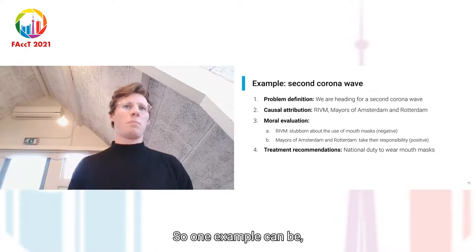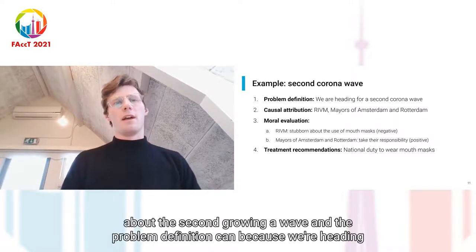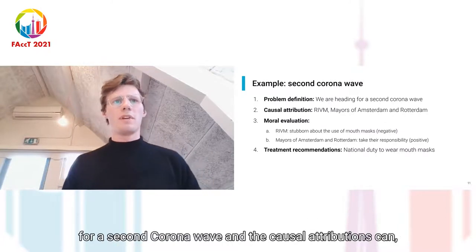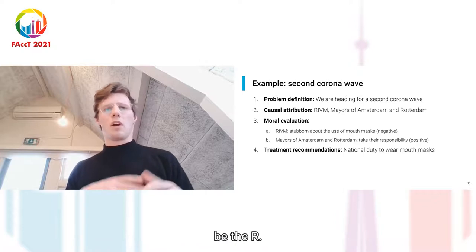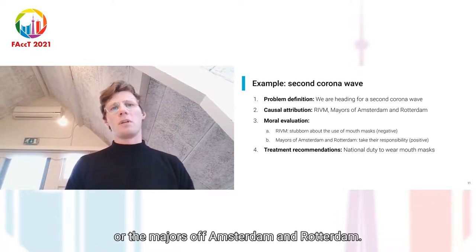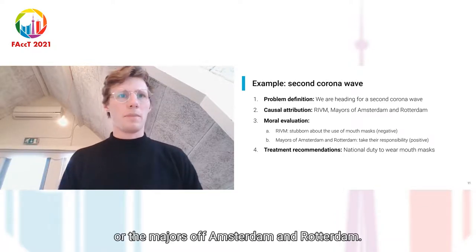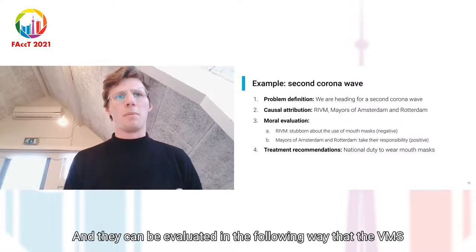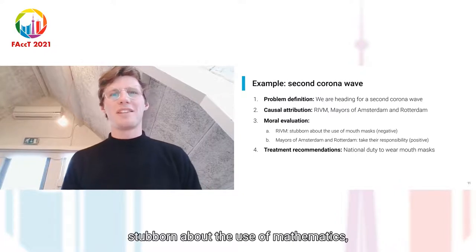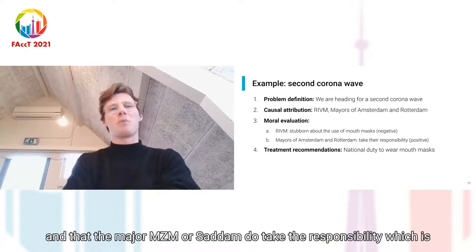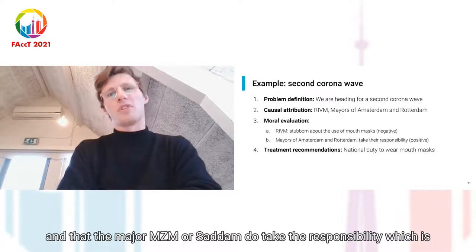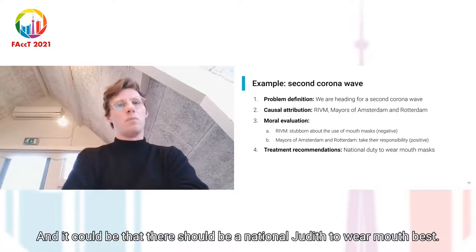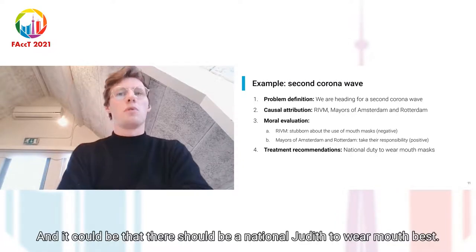One example can be about the second corona wave. The problem definition can be that we're heading for a second corona wave. The causal attributions can be the RIVM or the mayors of Amsterdam and Rotterdam. They can be evaluated in the following way: the RIVM is stubborn about the use of mouth masks, which is negative, while the mayors of Amsterdam and Rotterdam do take their responsibility, which is evaluated positively. A possible treatment recommendation could be that there should be a national duty to wear mouth masks.